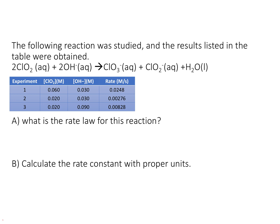We've got this reaction: chlorine dioxide reacts with hydroxide to form chlorate, chlorite, and water. What is the rate law for this reaction?